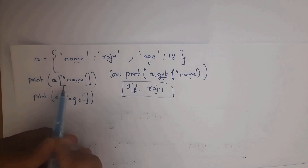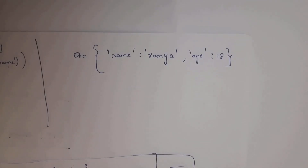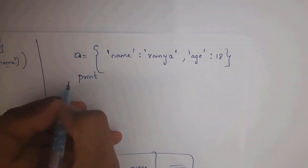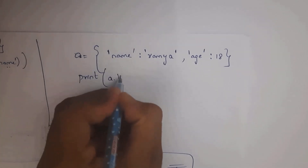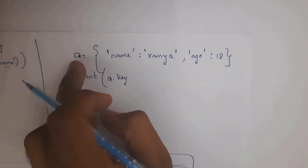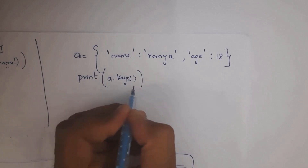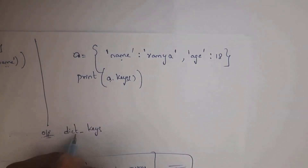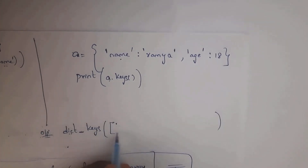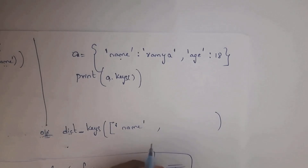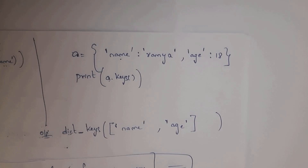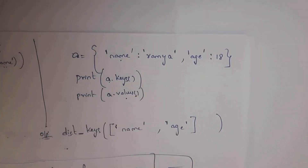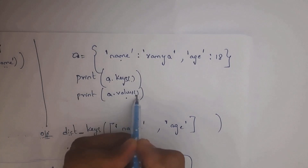With a = {'name': 'ramya', 'age': 18}, you can use the keys() method to find all keys. Write print(a.keys()) and you will get output dict_keys(['name', 'age']) — the keys are represented inside square brackets in list form. There are two keys: 'name' and 'age'. The keys() method returns only the keys of the dictionary.